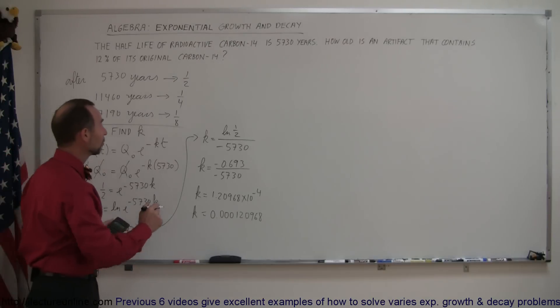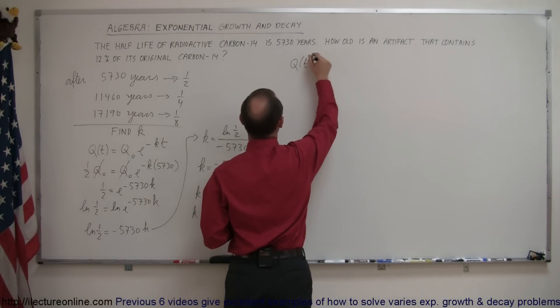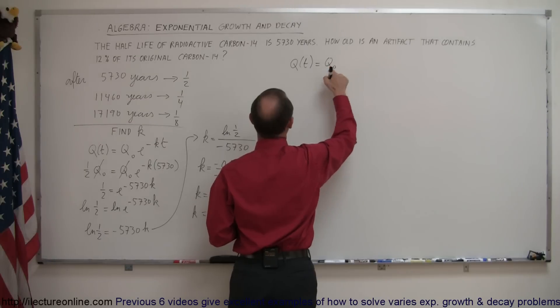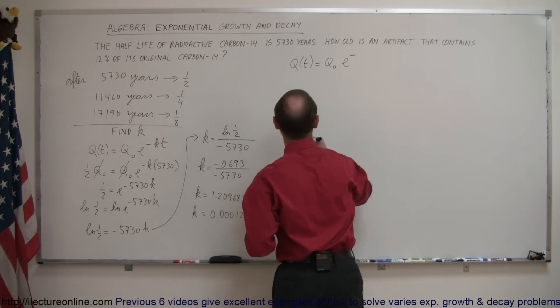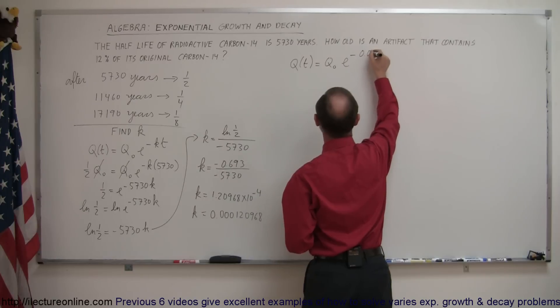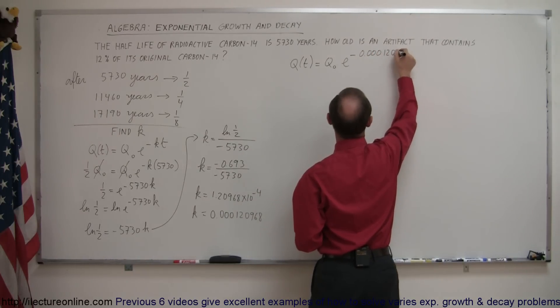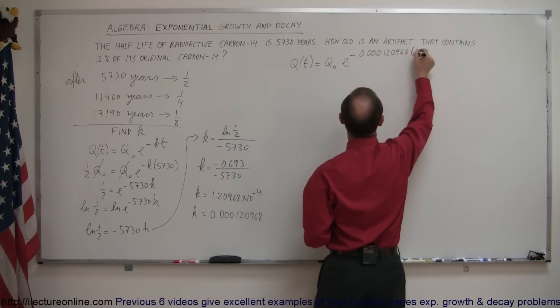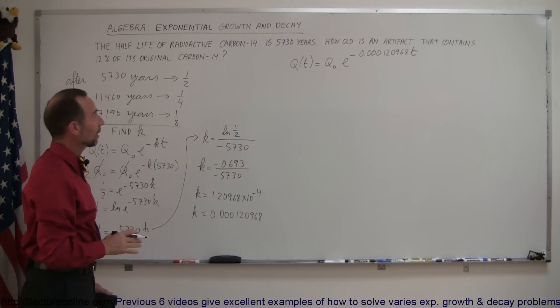So, now that we know the value for k, let's plug that back into the original equation. So, now the original equation becomes q as a function of time is equal to the original quantity that we have times e to the minus 0.00012968 times the time that has elapsed. So, now we can do the second part of the problem.